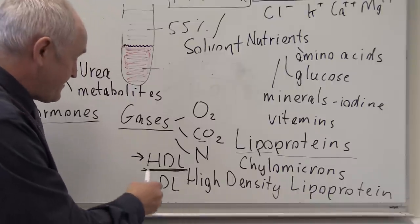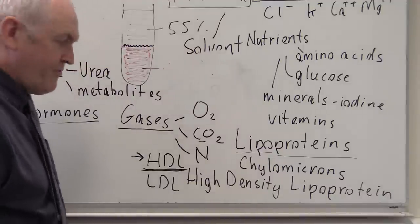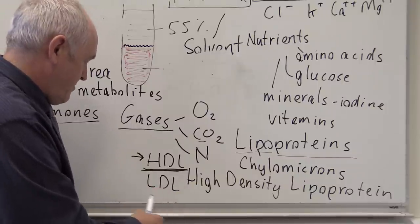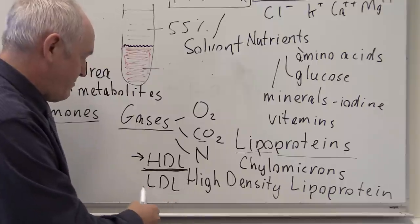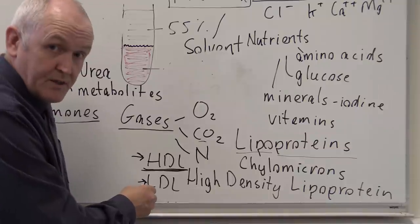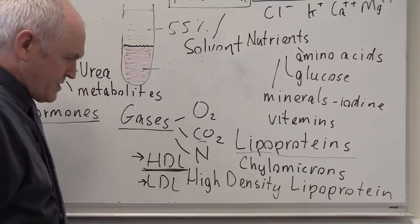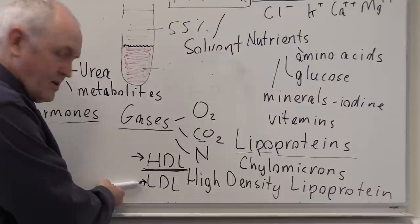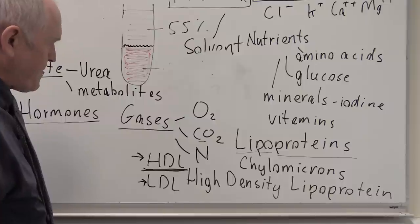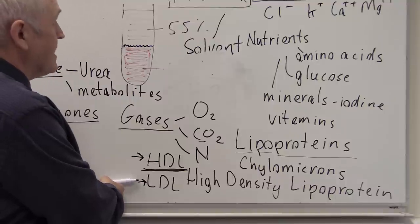LDL stands for low-density lipoprotein and is normally considered the bad form of cholesterol, because it takes fatty material from the liver where it is stored and deposits it in the blood. This increases the amount of fatty material in the blood, which can lead to the furring up of arteries in atherosclerosis. High levels of LDL are atherogenic and can lead to atheroma. Ideally we want high levels of HDL and low levels of LDL.